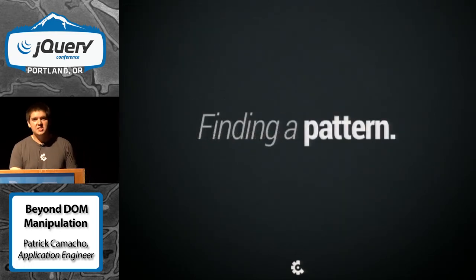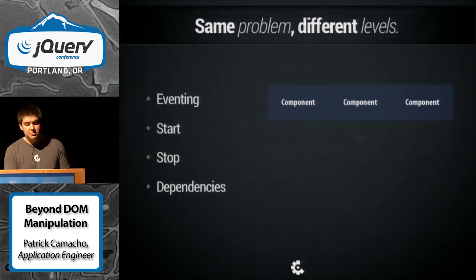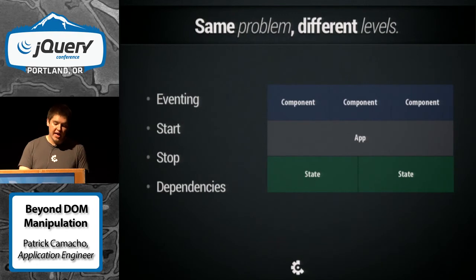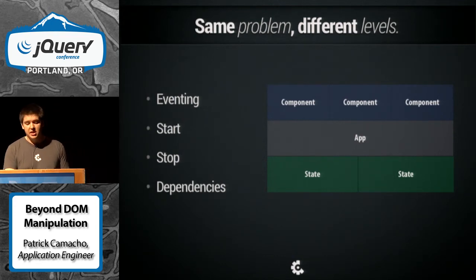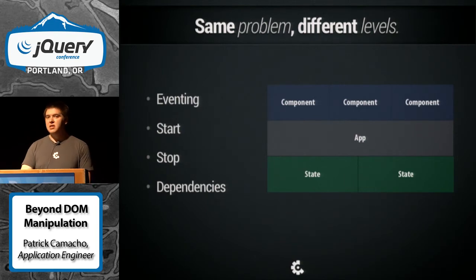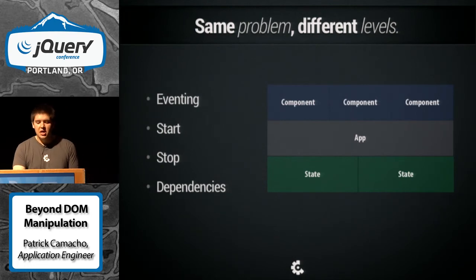We started finding this pattern: all these different pieces at all different levels had the exact same problems. We had components that needed to know how to start and stop themselves, how to manage their dependencies, and how to communicate through events. We had the same thing running for our applications and the router, and the same thing internally with our states listening to directors. We had been solving these problems in slightly different ways, and we knew there must be a unified answer.